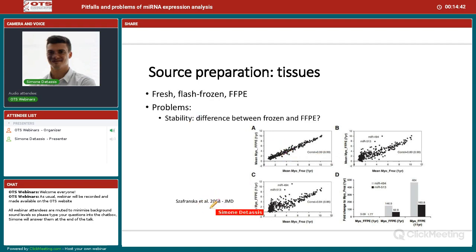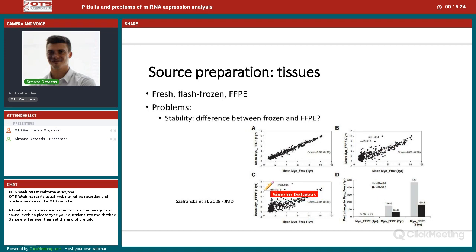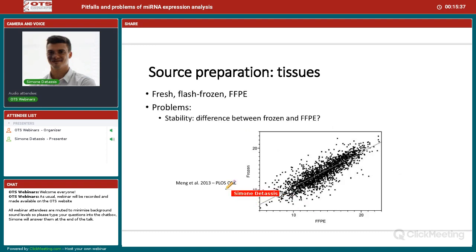I highlight a study where a microarray analysis on microRNAs of myocardial tissues was done, comparing frozen versus FFPE tissues of different ages. When tissues are one year old, the correlation in microRNA expression between the two sample types is very good — the same recovery and stability. But when tissues become older, the correlations start to break apart, and you no longer have reliable tissue. This is confirmed by another study with NGS data showing the same trend.